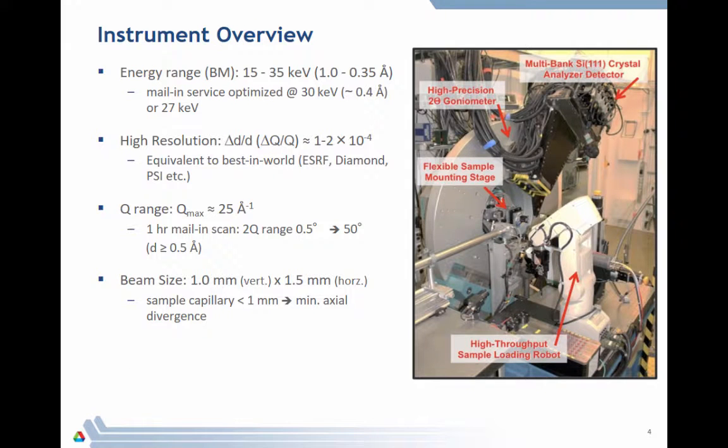So at 11-BM, we normally work at 30 keV. We found that's the good balance between penetration and flux for most samples. We can change from 15 to 35 keV. We are a high-resolution instrument. Our ΔD/D is somewhere between, it used to be 2×10⁻⁴, now somewhere between 1 and 2, which puts us equivalent to the best in the world, if not the best in the world.